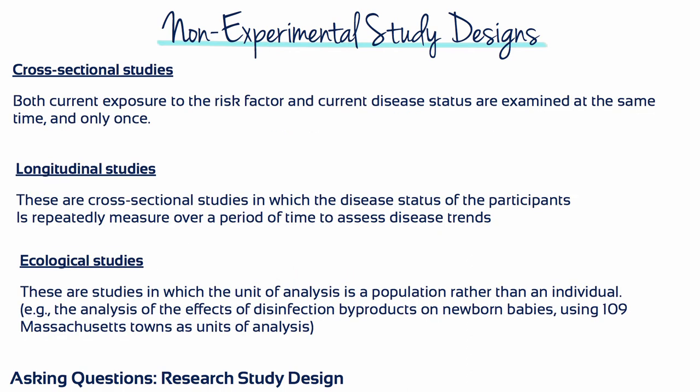In cross-sectional studies, both current exposure to the risk factor and current disease status are examined at the same time and only once — these are snapshots of the relationship between the risk factor and the disease. Longitudinal studies are cross-sectional studies in which the disease status of the patient is assessed repeatedly over a period of time, which can help to establish disease trends in a population.